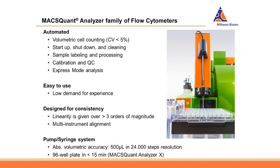Because of all these automation functionalities, the whole thing is easy to use. You select the cells and cocktail you're interested in, and the instrument takes care of everything else. The system is designed for consistency, meaning linearity is given over three orders of magnitude. For the MaxQuant, we use a pump syringe system to drive the sample through the flow cell. A full stroke of the plunger is 500 microliters, separated into 24,000 individual steps, meaning a single step is much less than one microliter — defining the precision and accuracy of the volumetric process.